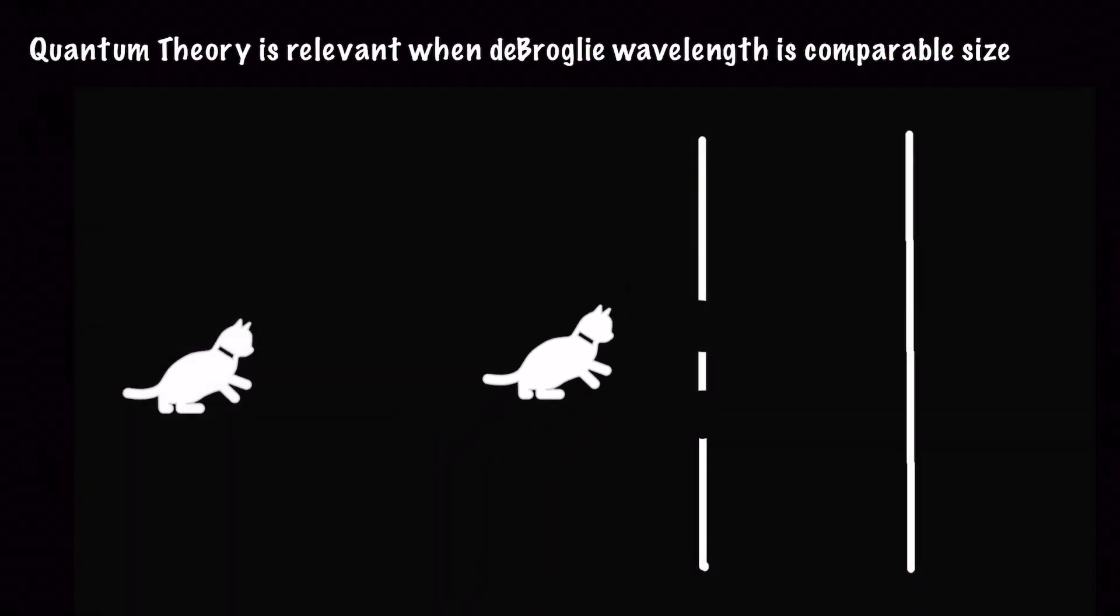While everything with mass has a de Broglie wavelength, and that wavelength is definitely significant for things like electrons, quantum theory is really only relevant when the de Broglie wavelength is comparable to the size of the object.